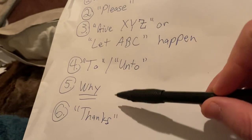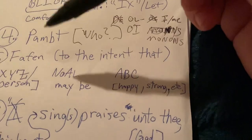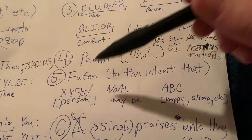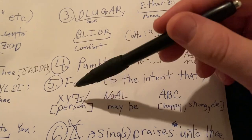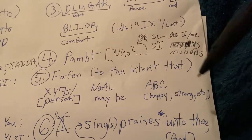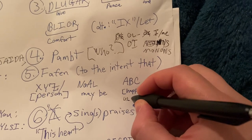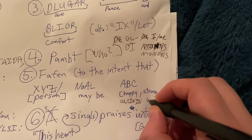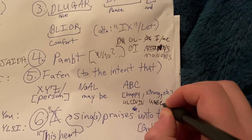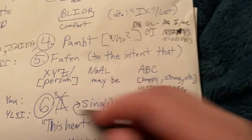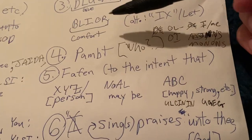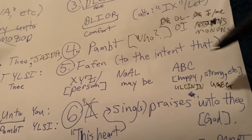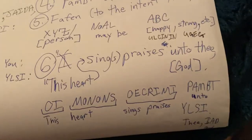Then the question is why? You say for this reason — to the intent that so-and-so may be happy, or strong, or whatever the case may be. So you'd say something like 'we'll see you mean' — that so-and-so would be happy or strong. That's the 'why' part — please God, please do this thing so that somebody may be happy. And then you wrap it up by saying thank you.